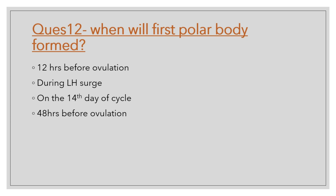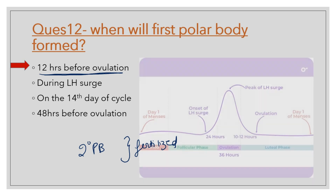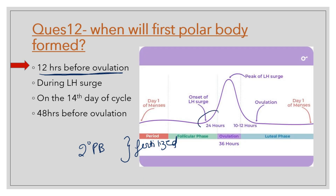Question number 12: When will the first polar body form — 12 hours before ovulation, during the LH surge, on the 14th day of the cycle, or 48 hours prior to ovulation? The correct option is A: 12 hours before ovulation. The second polar body is formed only at fertilization when sperm entry occurs. The first polar body is formed 12 hours before ovulation. As seen in the diagram, there is an LH surge 24 hours prior to ovulation, and during the peak of the LH surge the first polar body is formed.